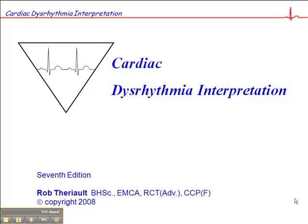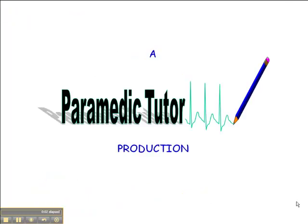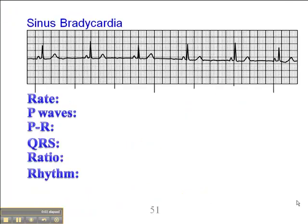This next rhythm is on page 51 of your workbook. This is sinus bradycardia. For all intents and purposes, sinus bradycardia is exactly the same as a sinus rhythm, with one exception: the heart rate is less than 60.